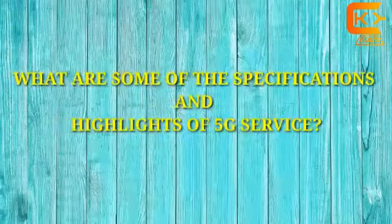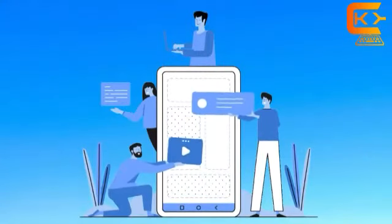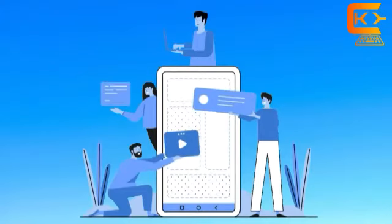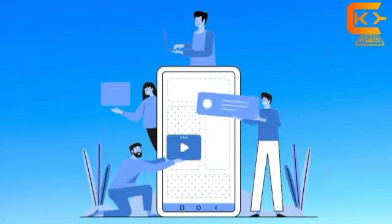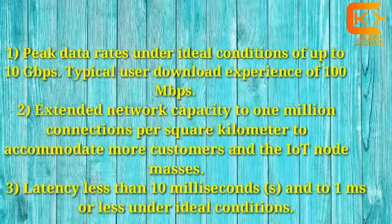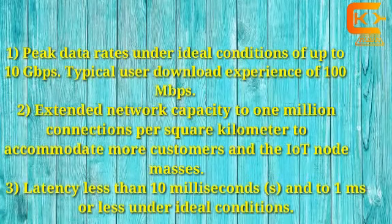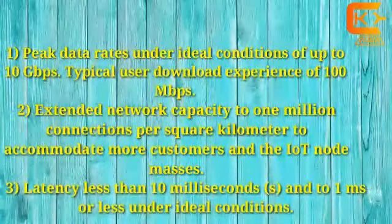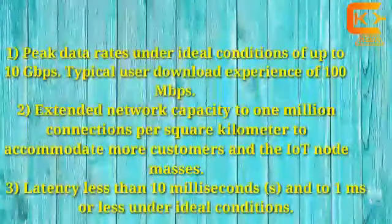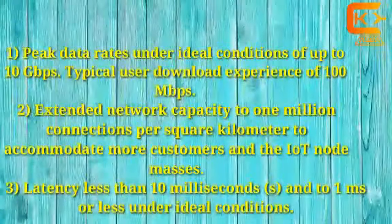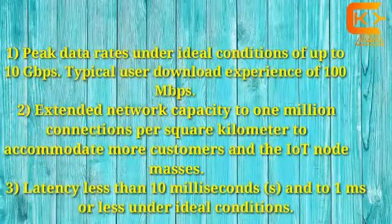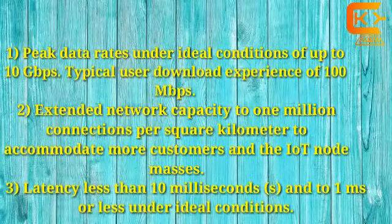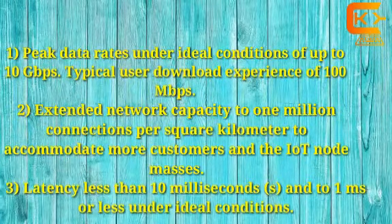What are some of the specifications and highlights of 5G service? First, peak data rates under ideal conditions of up to 10 gigabits per second, with a typical user download experience of 100 megabits per second. Second, extended network capacity to 1 million connections per square kilometer to accommodate more IoT devices. Third, latency of less than 10 milliseconds, and as low as 1 millisecond or less under ideal conditions.